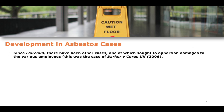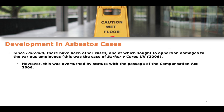Since Fairchild, there have been other cases, one of which sought to apportion damages to various employers. This was the case of Barker v Corus UK. However, this was overturned by statute through the passage of the Compensation Act of that same year.